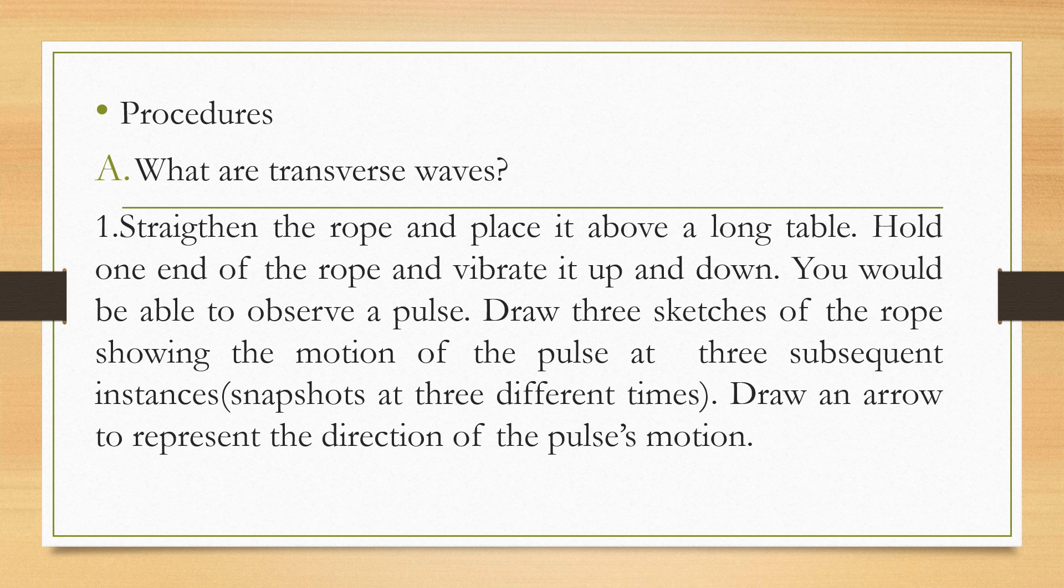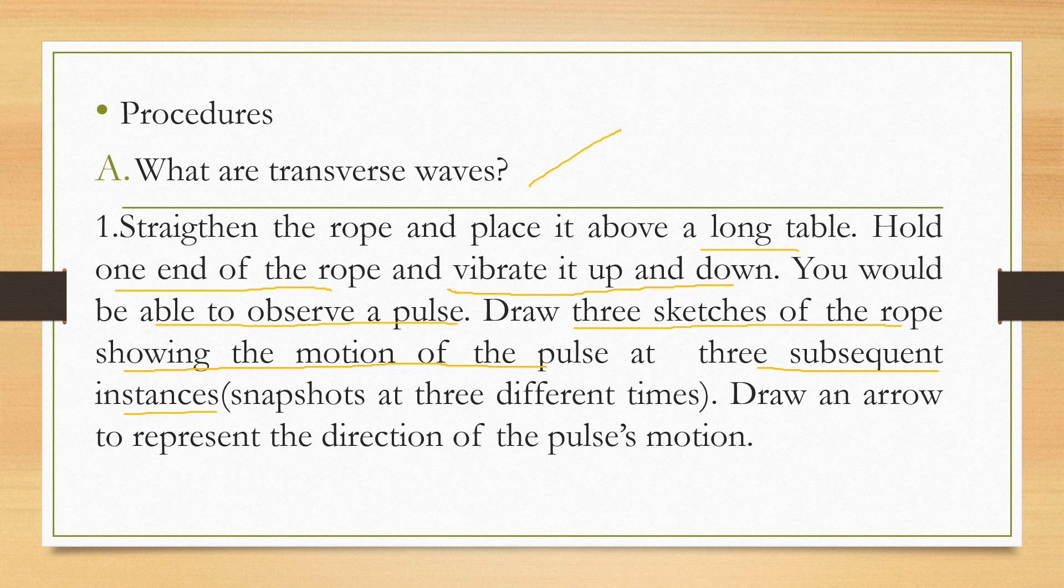Procedures. A, what are transverse waves? You need to answer this one class. Listen carefully to our procedures. First, straighten the rope and place it above a long table. Hold one end of the rope and try to vibrate it up and down. You would be able to observe a pulse. Then draw three sketches of the rope showing the motion of the pulse at three subsequent instances. Take note, snapshots at three different times. You need to draw an arrow to represent the direction of the pulse motion.